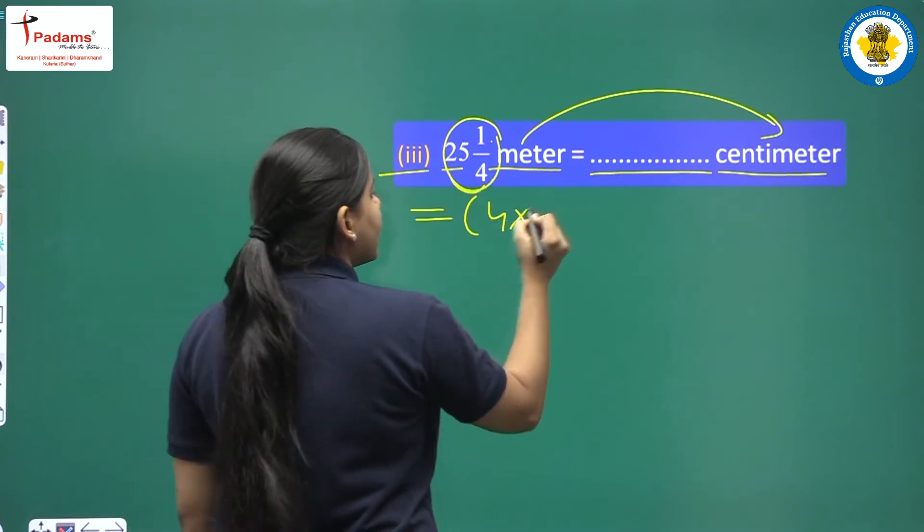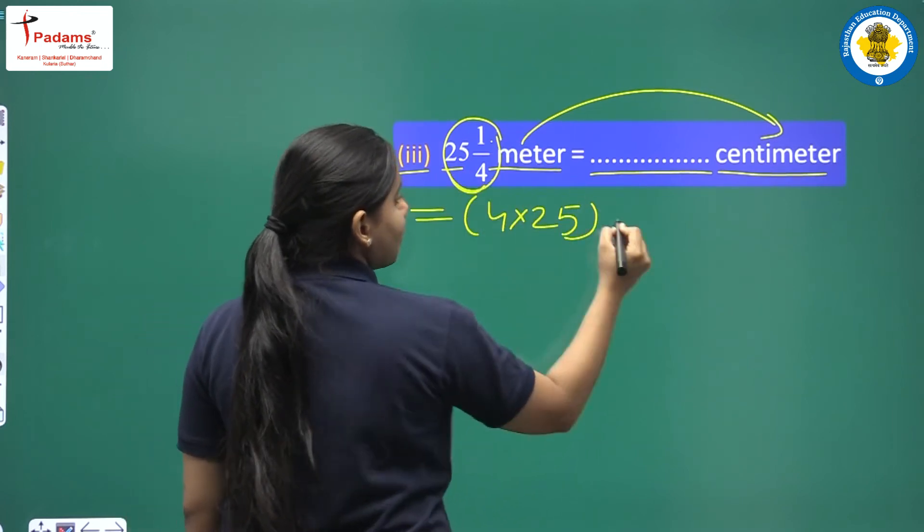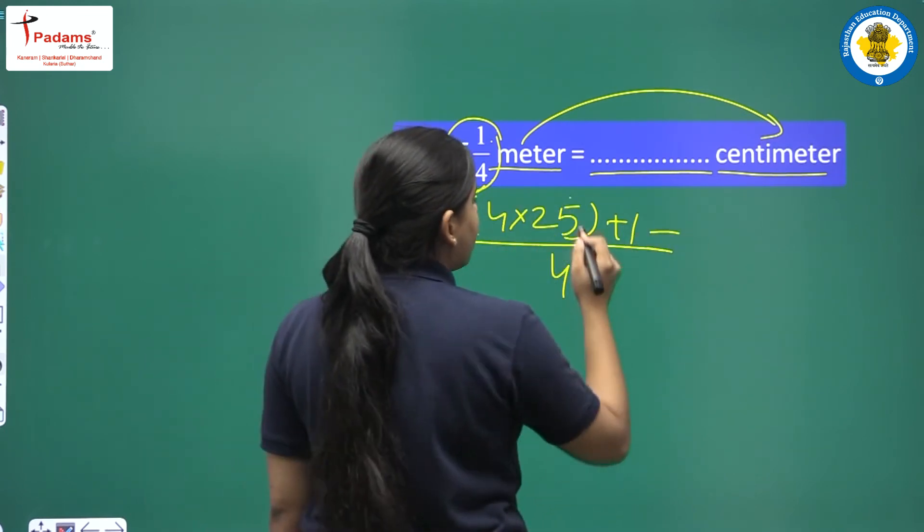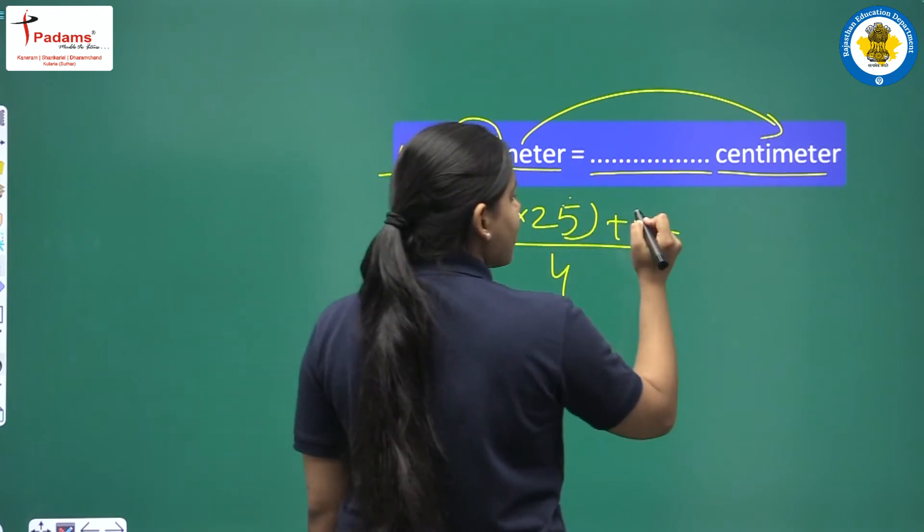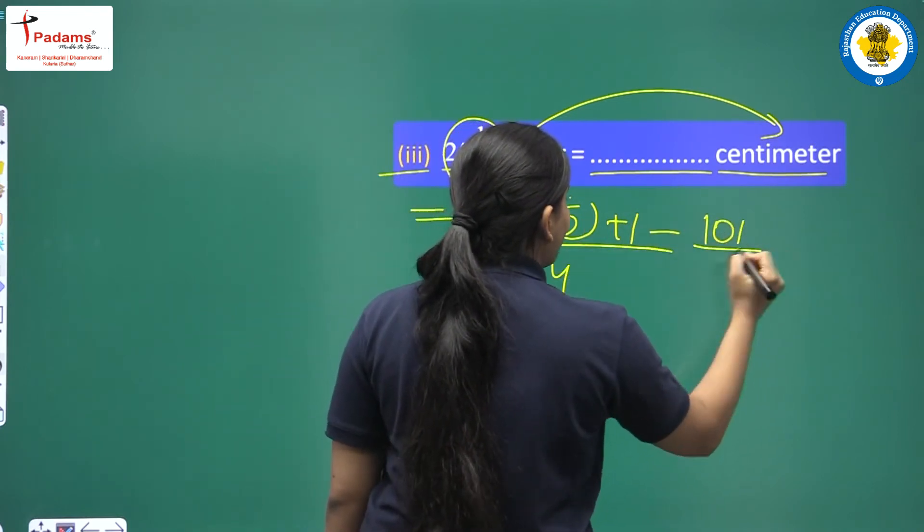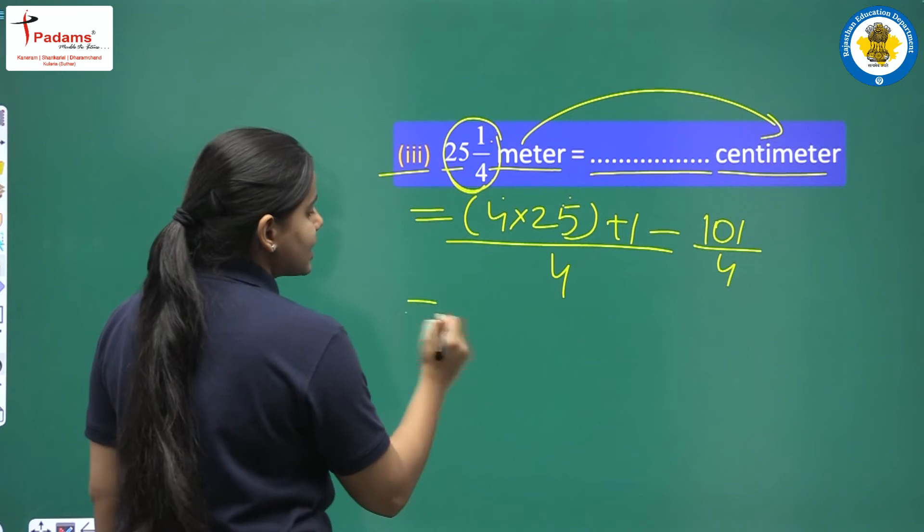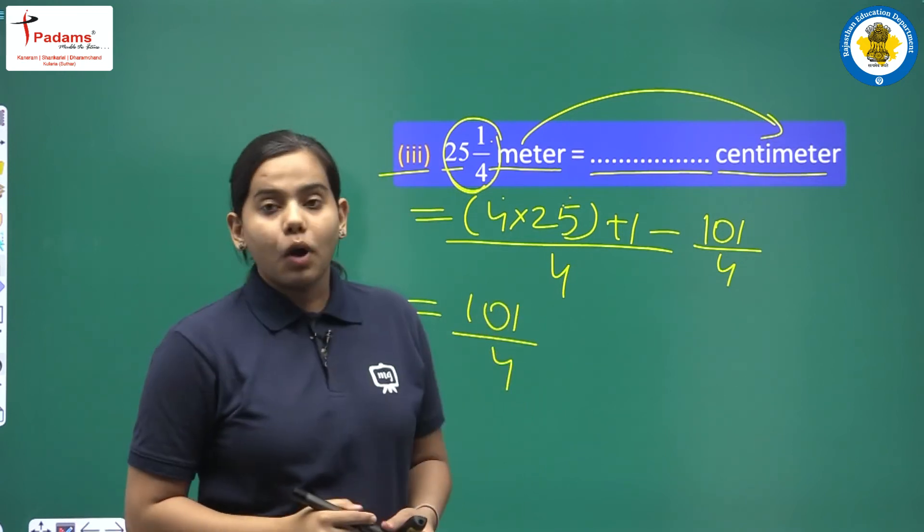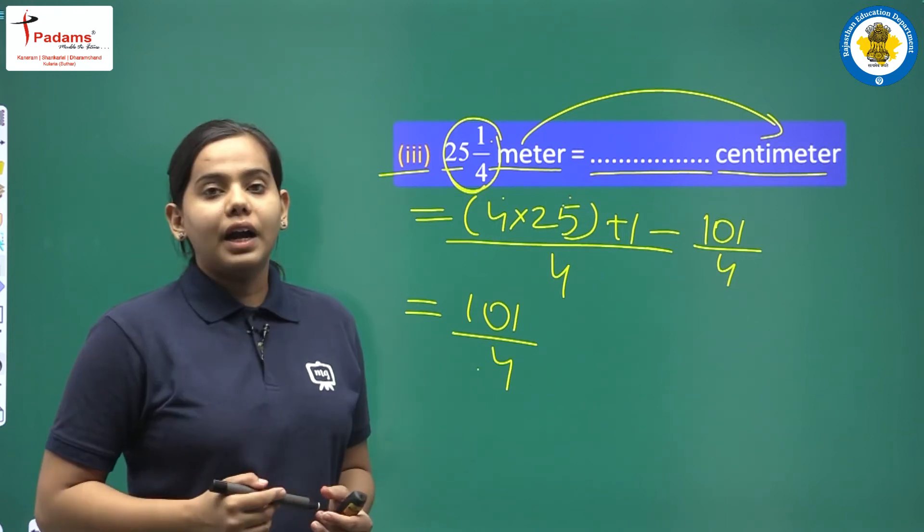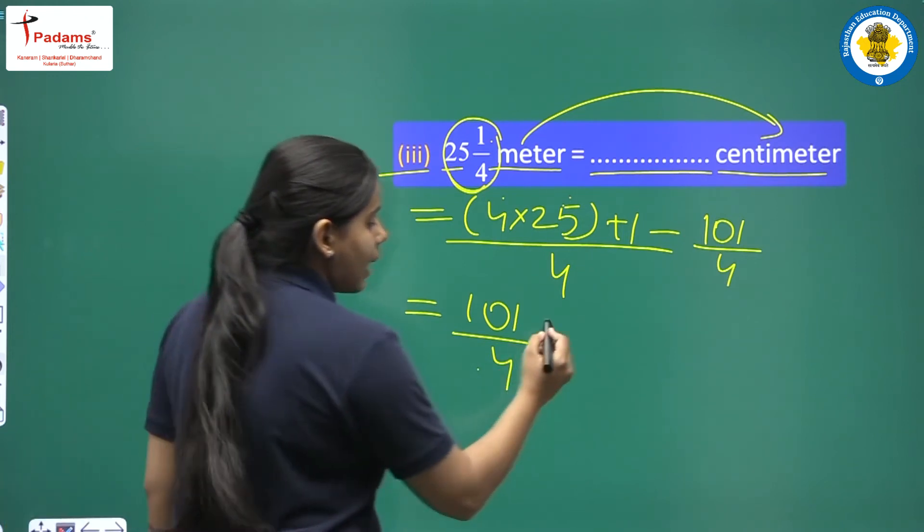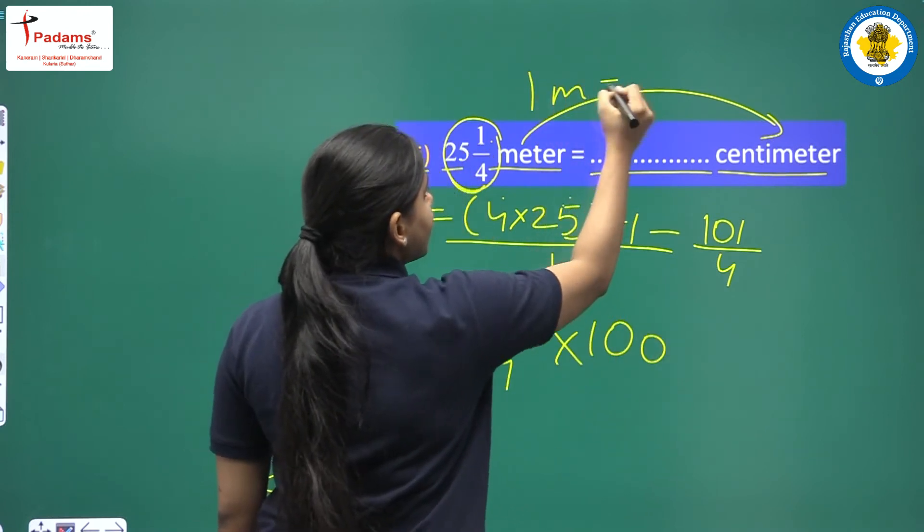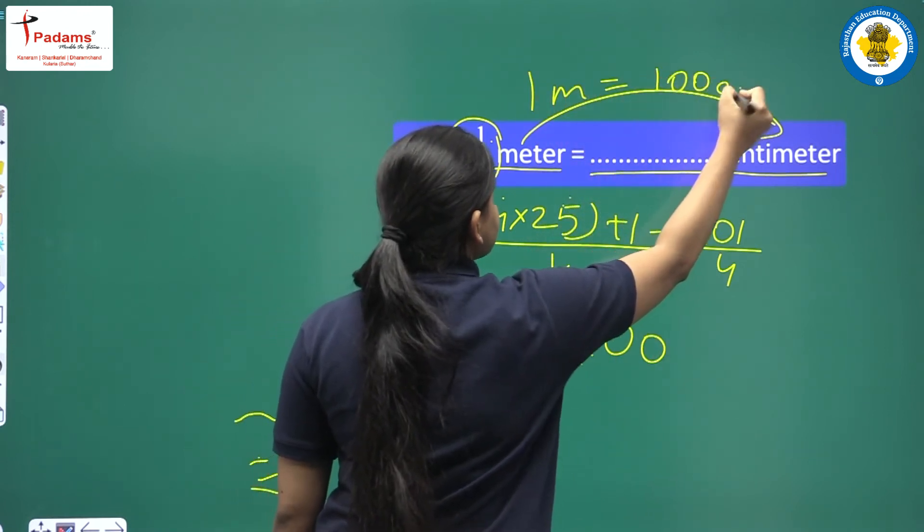4 multiply by 25. After that plus 1. Denominator will be same. So 4 times 25 or 25 times 4 is 100. 100 plus 1 is 101. And upon 4 is same. Now we have got the mixed fraction changed into improper fraction after. 101 upon 4. We have to multiply by 100. Because 1 meter equals 100 centimeters. Okay?